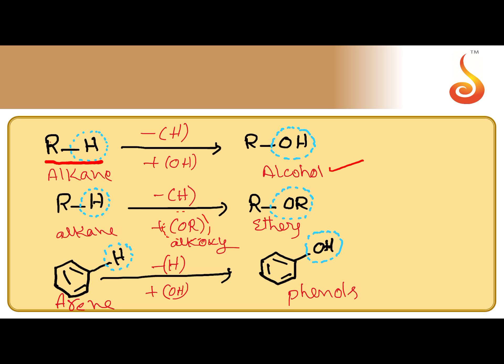When H of an alkane is substituted with an OR group — OR group is called an alkoxy group — we get an ether. Similarly, phenols are hydroxy derivatives of arene; when the hydrogen atom of the arene ring is substituted with OH, we can get phenols. So: hydroxy derivatives of alkanes are alcohols, alkoxy derivatives of alkanes are ethers, and hydroxy derivatives of arene are called phenols.